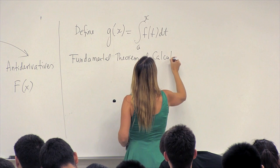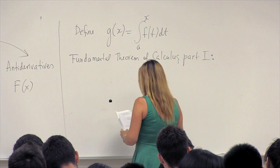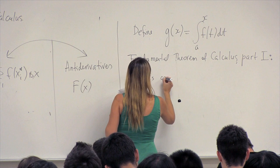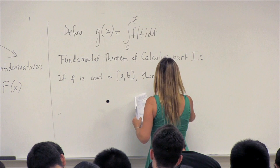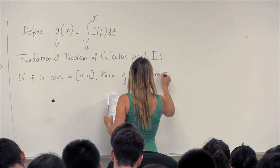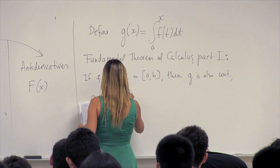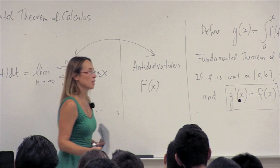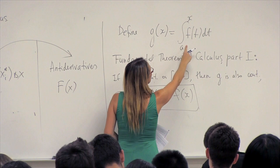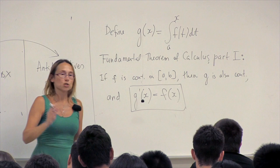The statement is that if f is continuous on [a, b], then this function g is also continuous. And the derivative of g with respect to x is given by f of x. So this is the main statement of this theorem. You can see that g is a definite integral of f, and f is the derivative of g — so already you see some connection between the definite integral and differentiation.